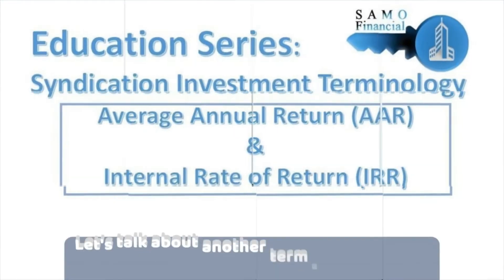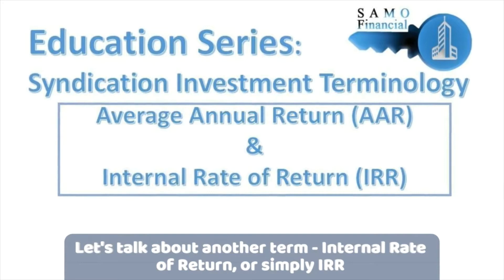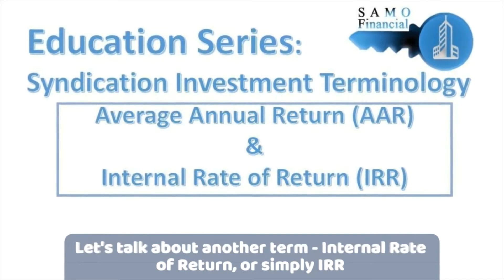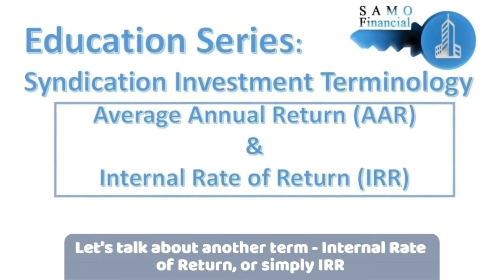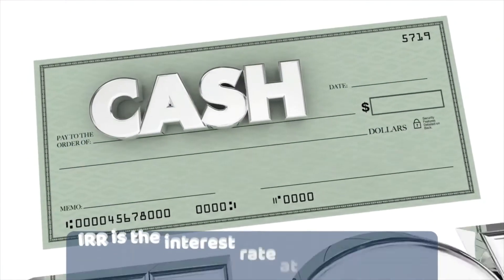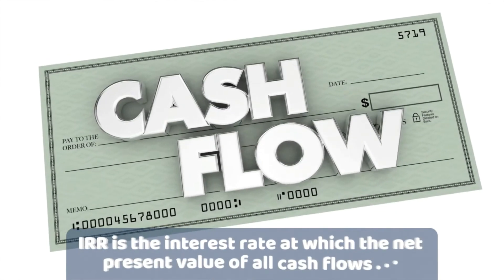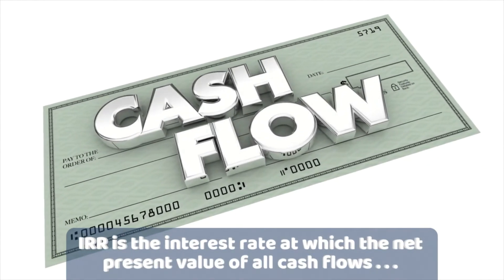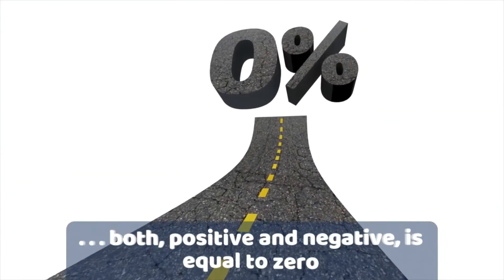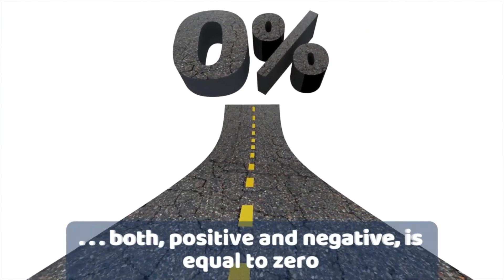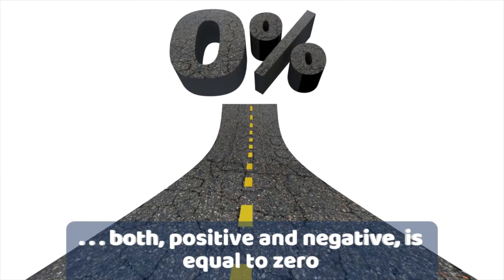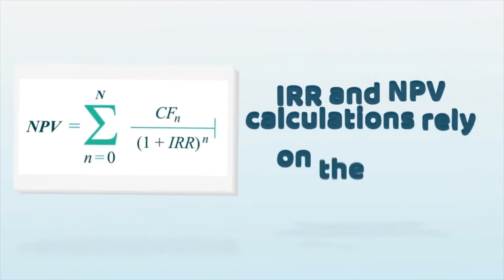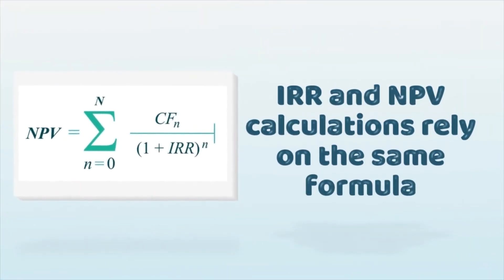Let's talk about another term: internal rate of return, or simply IRR. IRR is the interest rate at which the net present value of all cash flows, both positive and negative, from a project or investment equals zero. IRR and NPV calculations rely on the same formula.